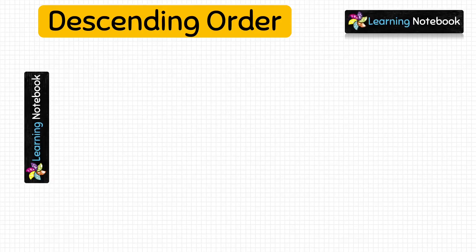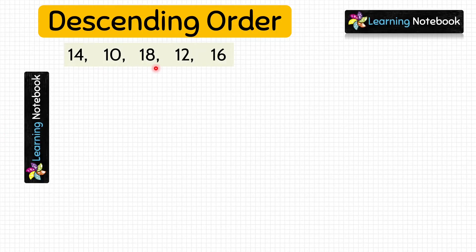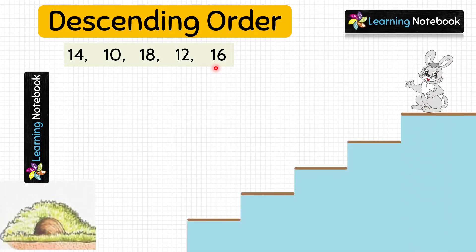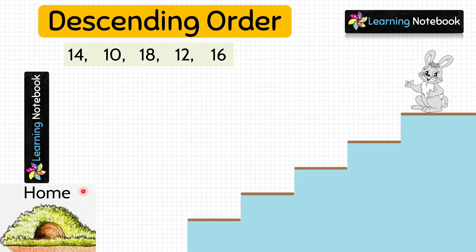Now let's arrange these given numbers in descending order. The numbers are 14, 10, 18, 12, and 16. After having his food, bunny wants to go back home to take rest, but he can get there only if he arranges these numbers in descending order — that is from big to small. So let's help him.